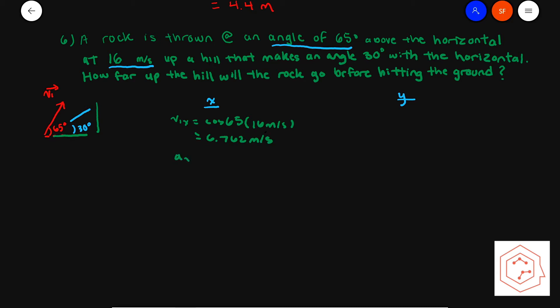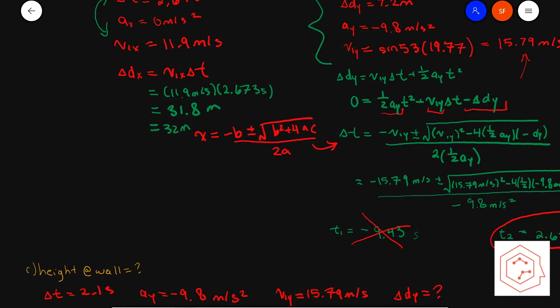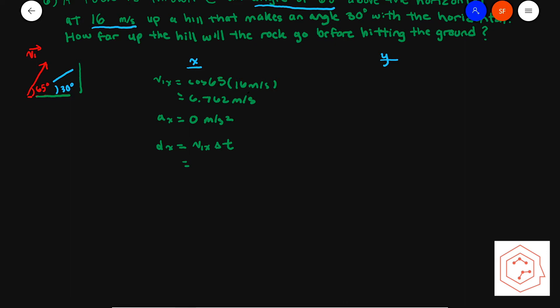We know that acceleration in x is zero meters per second squared. Solving for dx using this equation — since acceleration is zero — we get that dx is equal to v1x, which is 6.762 meters per second, times time. Now applying this analysis to the y component, we know that the initial velocity in the y component is sin(65°) times 16 meters per second, which gives you 14.50 meters per second.